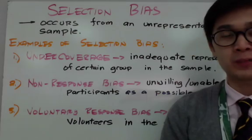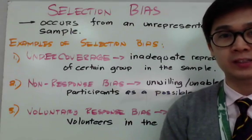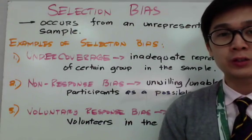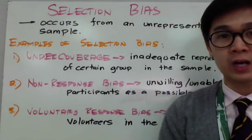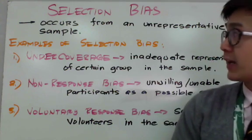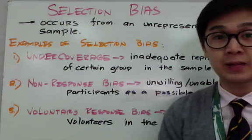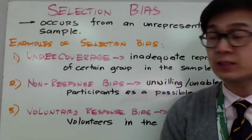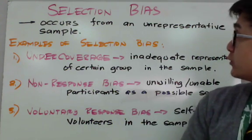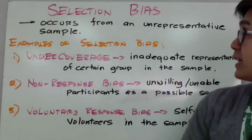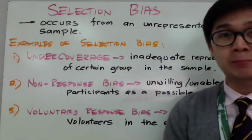In an experiment, especially in a statistical experiment, you should be able to recognize selection bias. By definition, selection bias occurs from an unrepresentative sample.